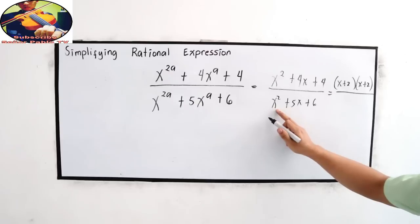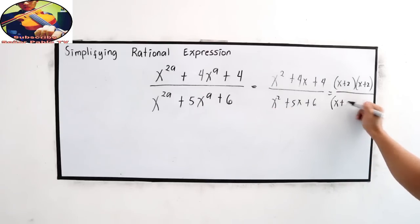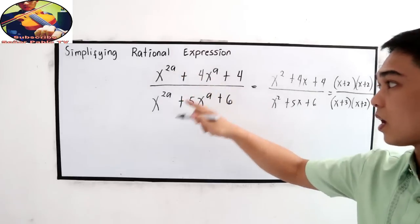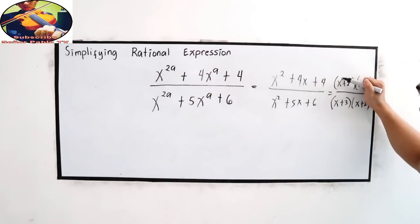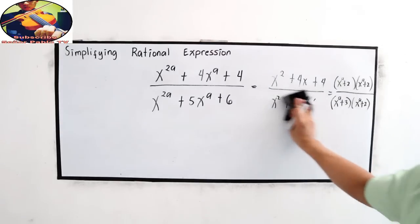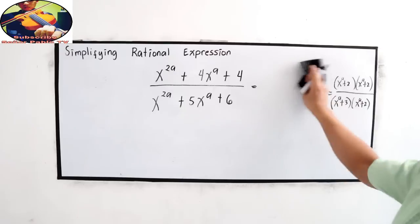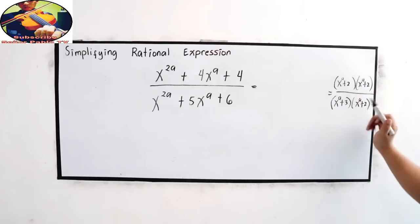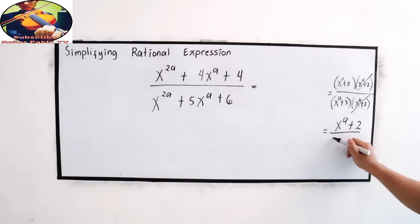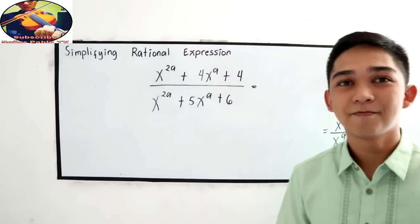How about our denominator? This is x plus factors of 6 are 3 and x plus 2. But, since in our original given we have a in the exponent, just write a in our exponent on x. Since we have a in our exponent, cancel similar terms. Our final answer is x raised to a plus 2 all over x raised to a plus 3. As easy as that.